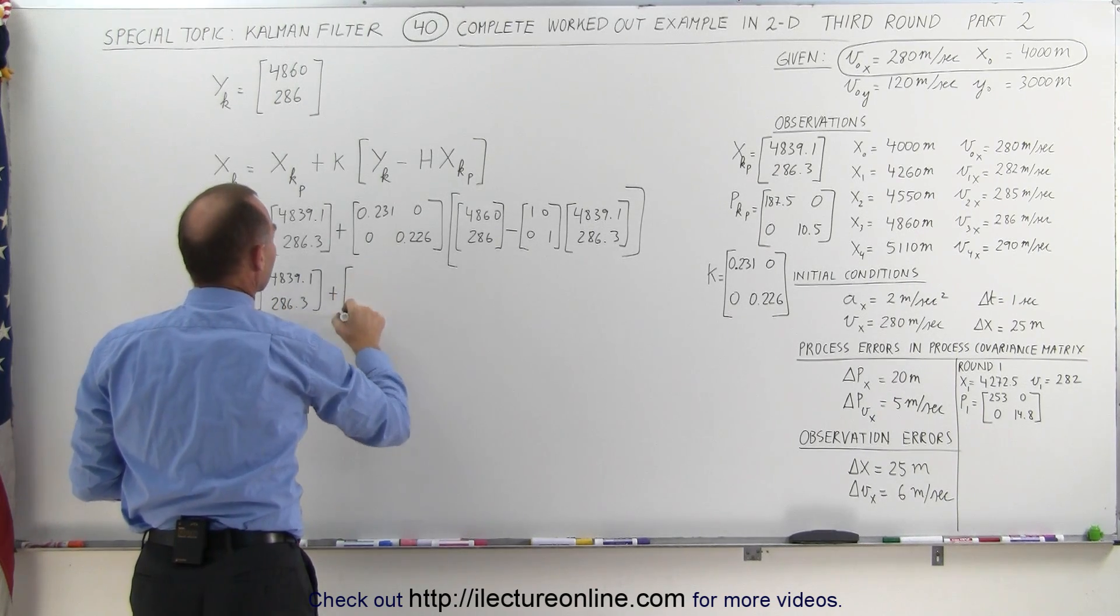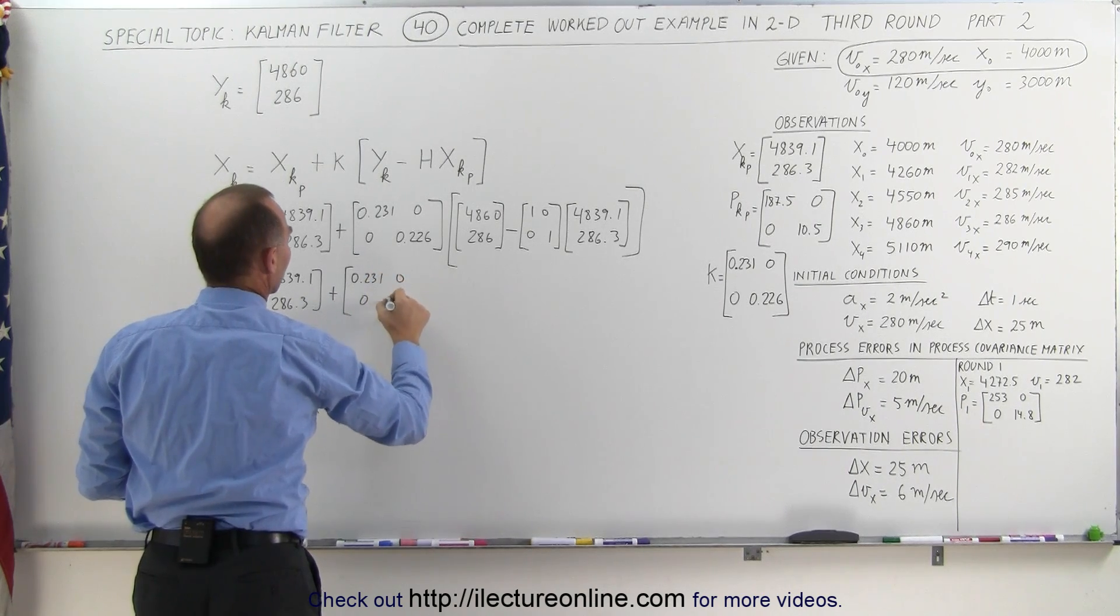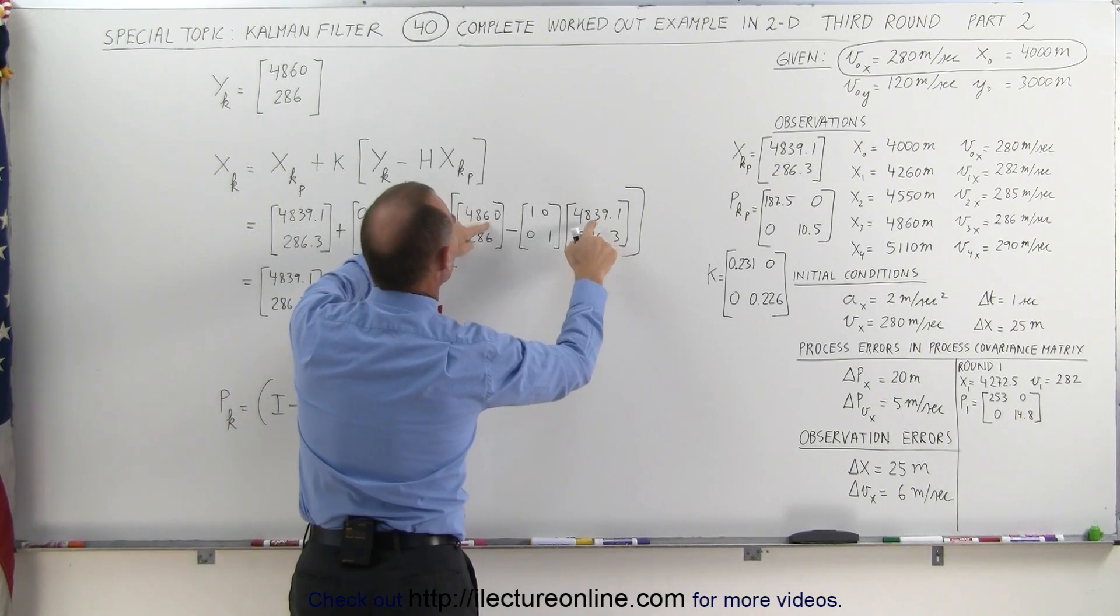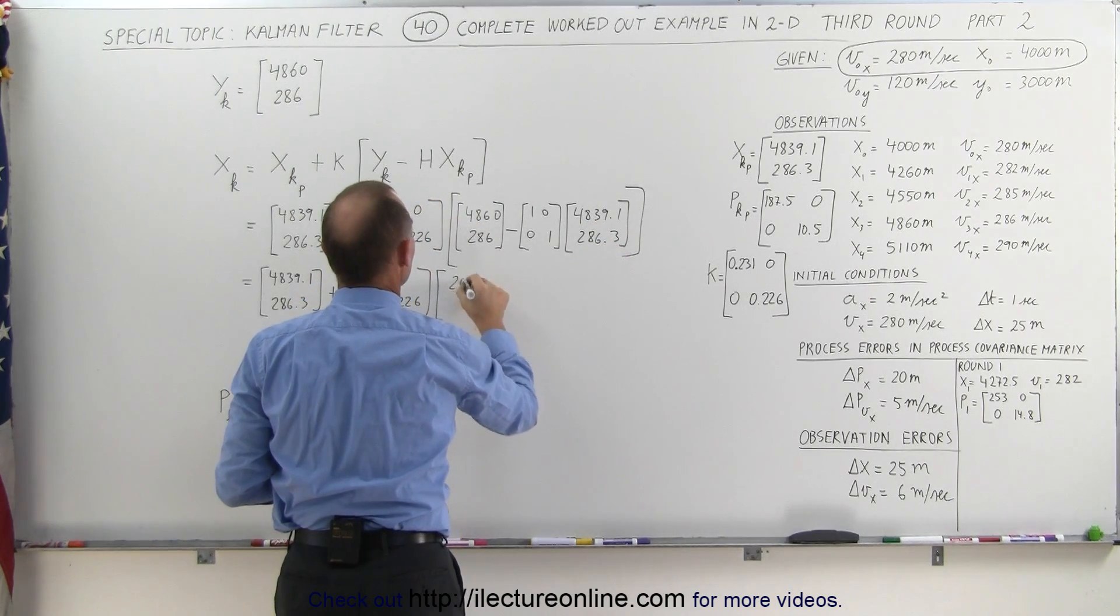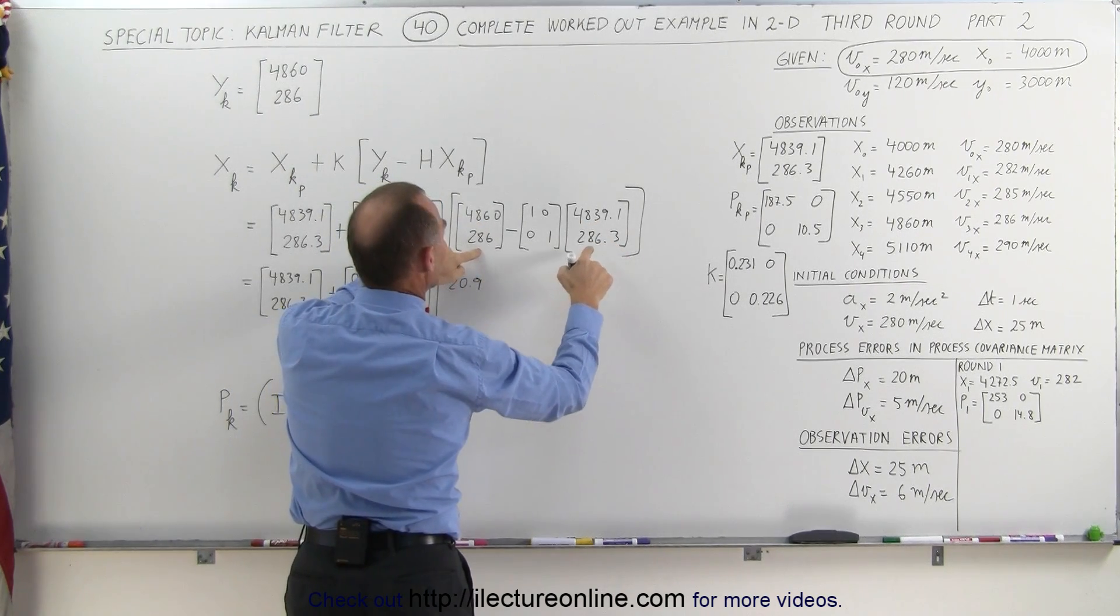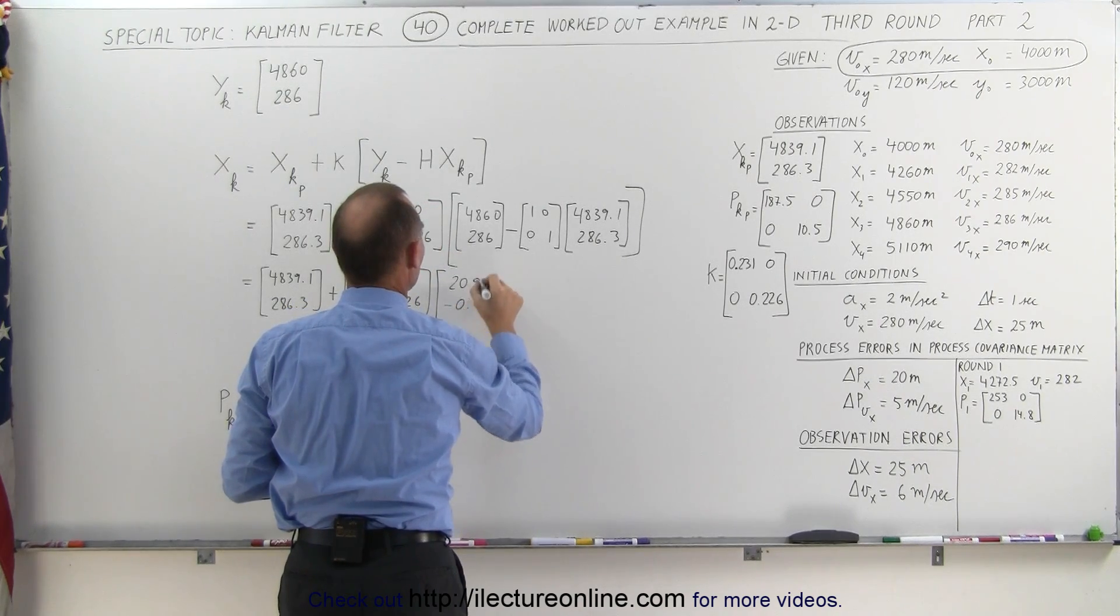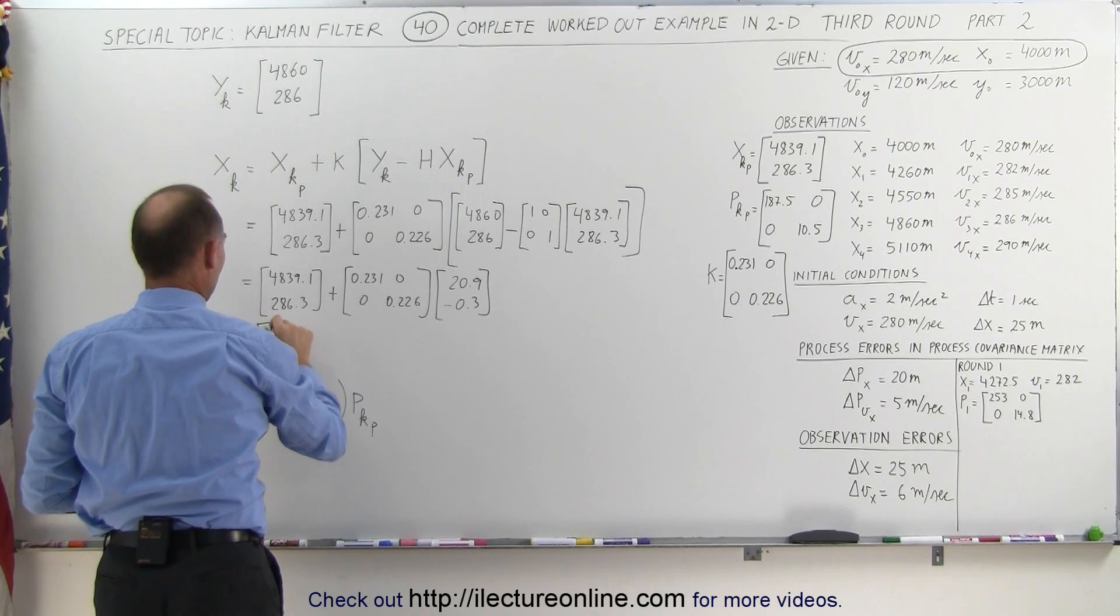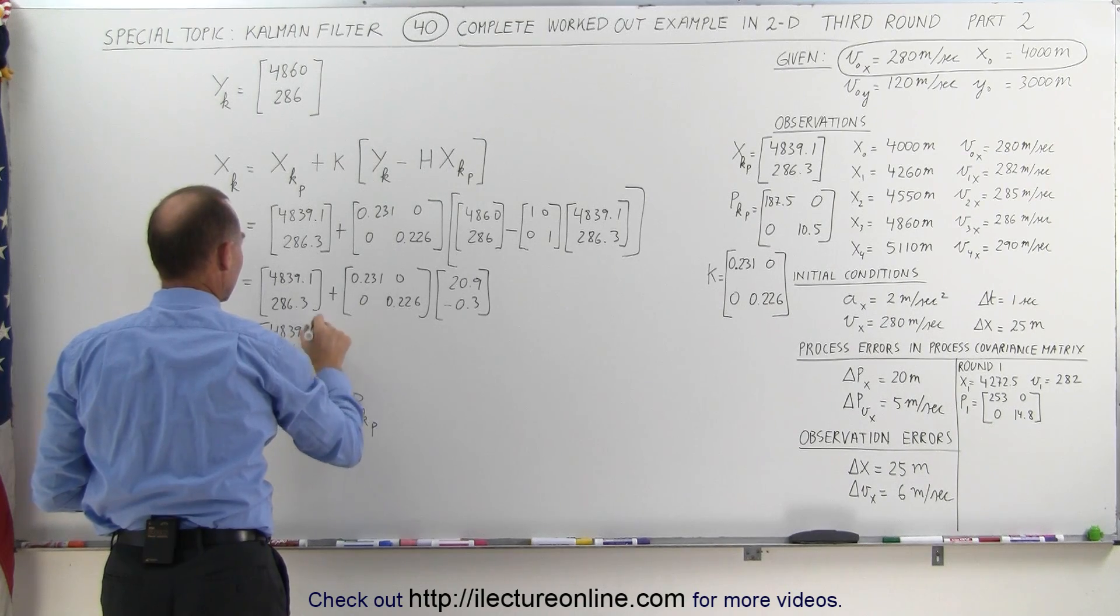Plus the Kalman gain: 0.231, 0, 0, 0, 0.226. Multiplied times this minus this. Now this is bigger, so this becomes 20.9. And 286 minus 286.3—this is bigger, so it's a minus 0.3. This is equal to 4839.1, 286.3.